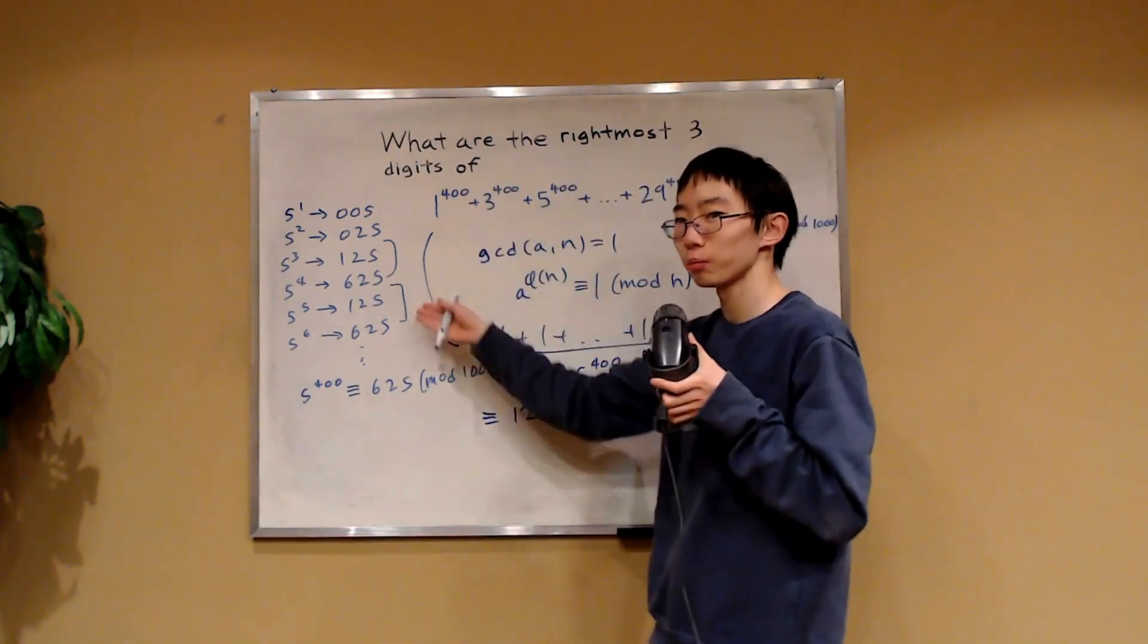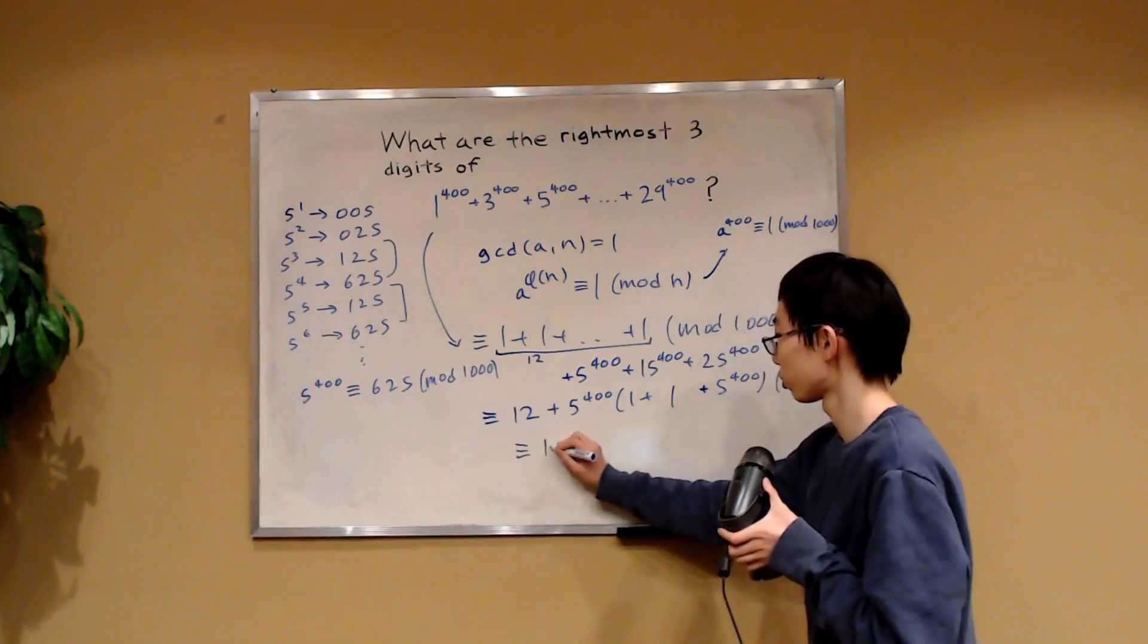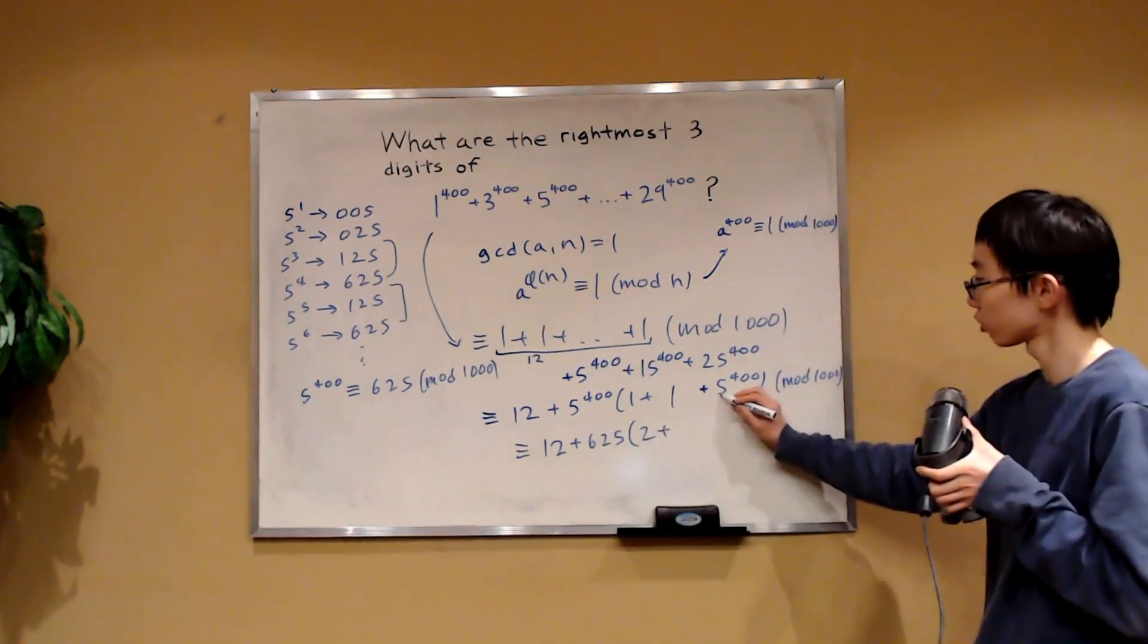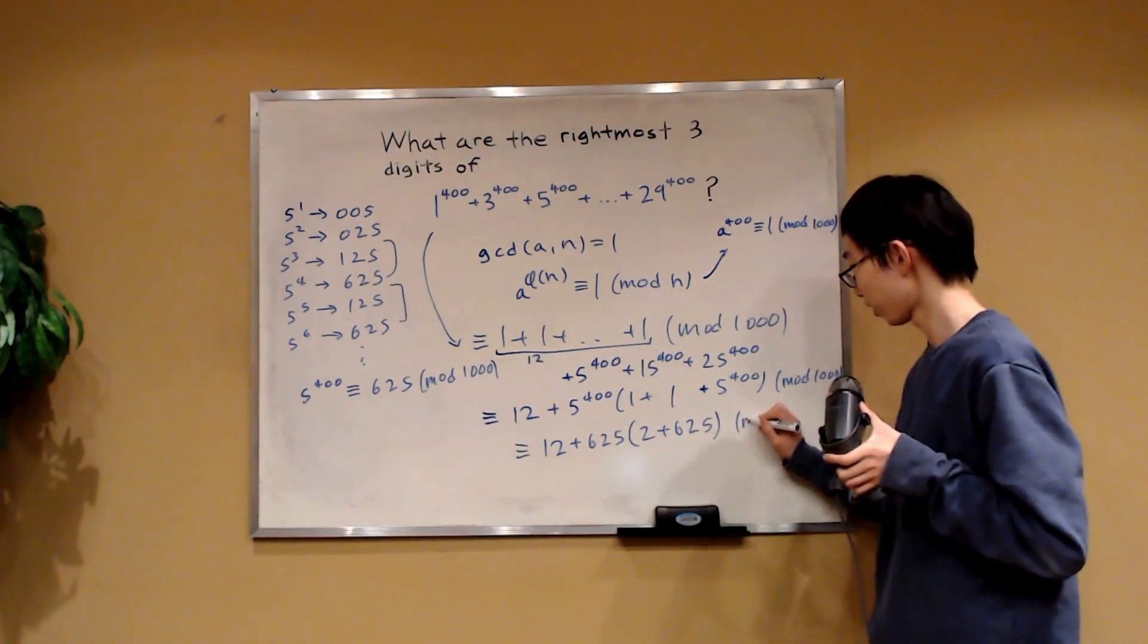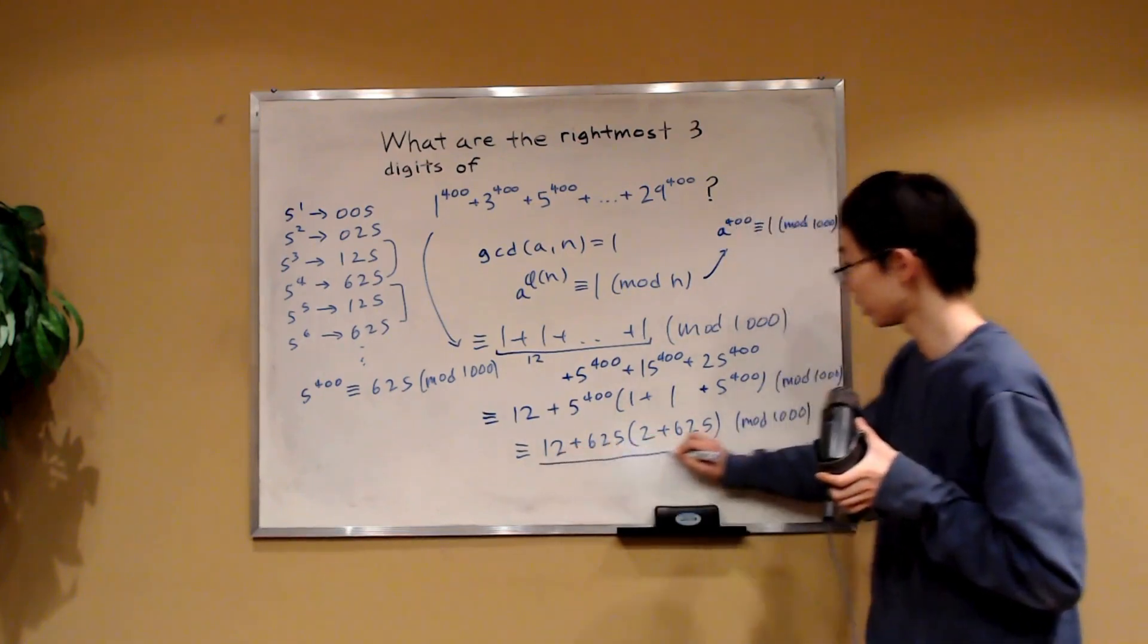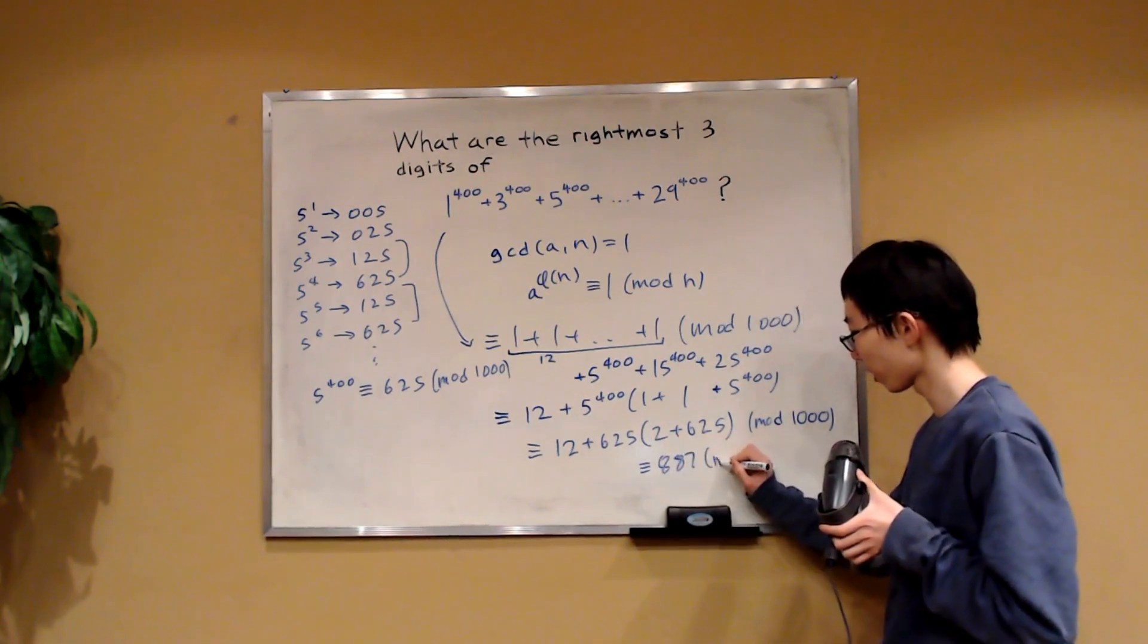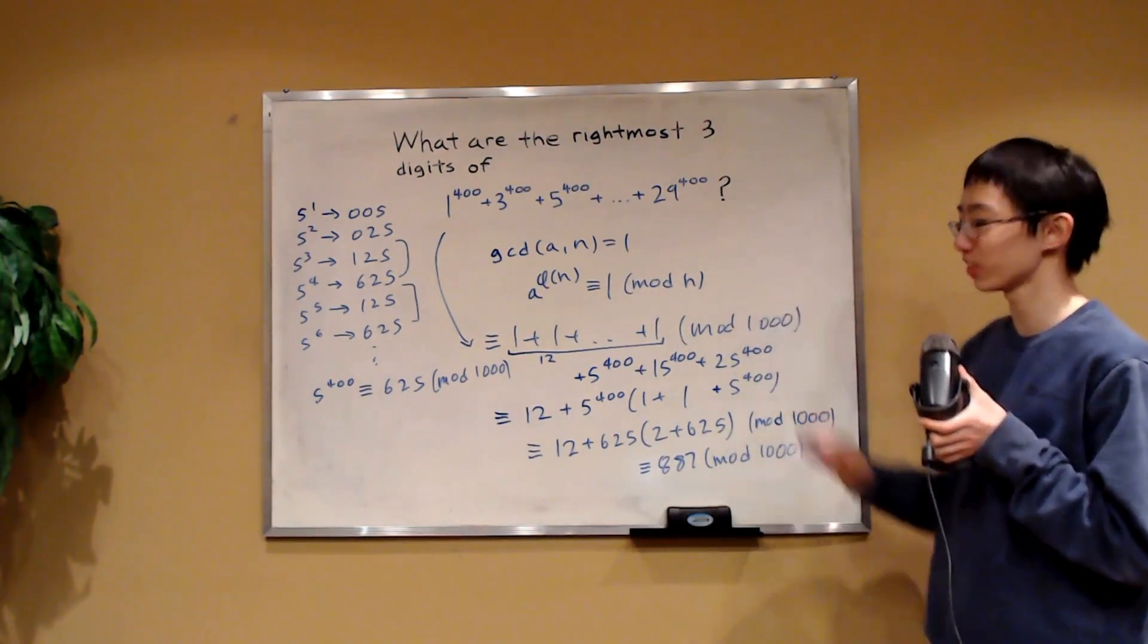So therefore this entire modular expression is just congruent to 12 and then plus 5 to the 400 that's congruent to 625 mod 1,000 and we have 1 plus 1 that's 2 and then plus this one is also congruent to 625 mod 1,000. And there we have it, this is finally an expression we can easily evaluate. If you were to actually evaluate this you would see that this over here is congruent to 887 mod 1,000.